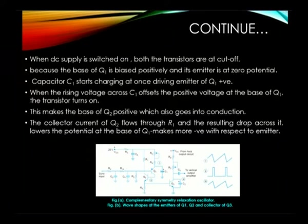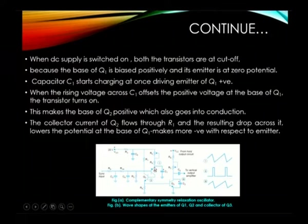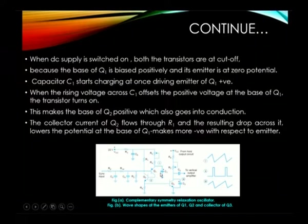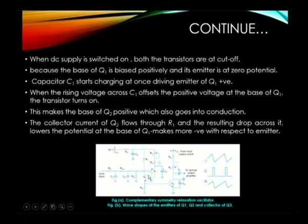Q1 is biased positively and its emitter is at zero potential; it must be driven with a positive voltage. When the rising voltage across C1 offsets the positive voltage, the driving voltage from C1 turns transistor Q1 on. This also makes Q2 positive, causing Q2 to conduct as well. Both transistors will be in conduction.